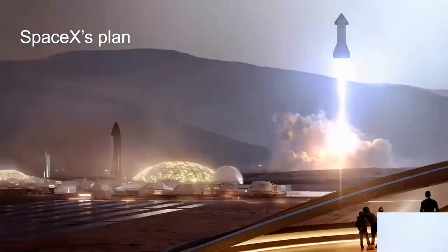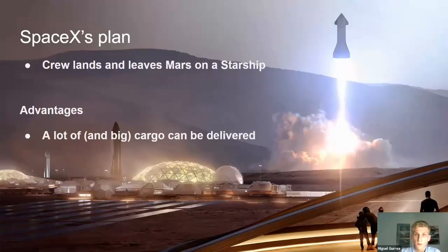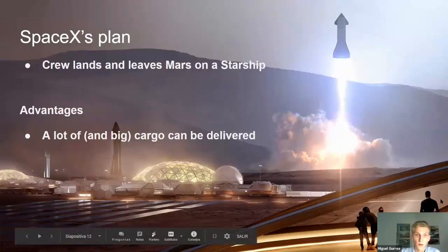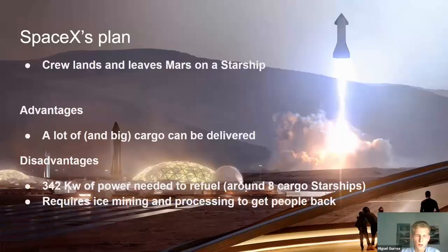SpaceX's plan uses a Starship to launch people from Earth, land on Mars, refuel on Mars — getting water from the ground and CO2 from the atmosphere — refuel the ship, and come back to Earth in the same Starship. The advantages of this plan: it's a huge ship, so you can take a lot of cargo and large volumes. But it also comes with some disadvantages.